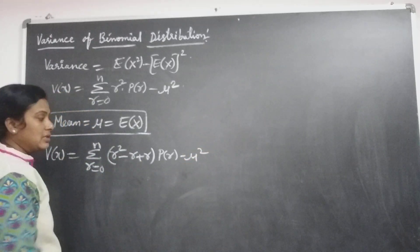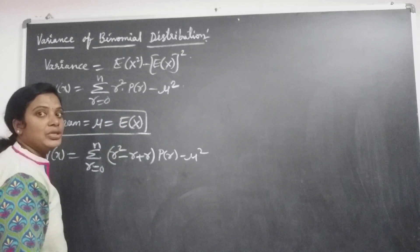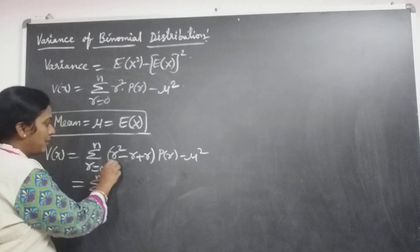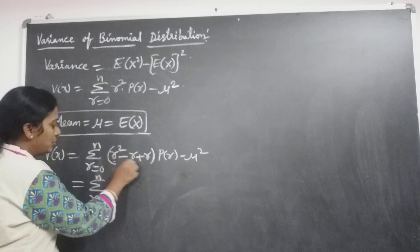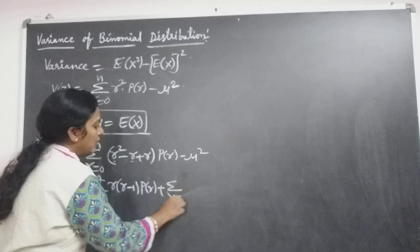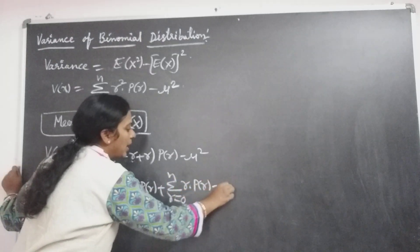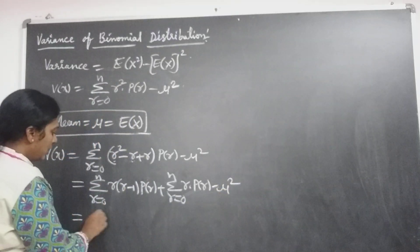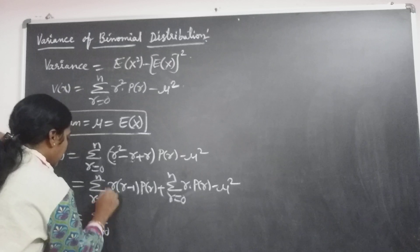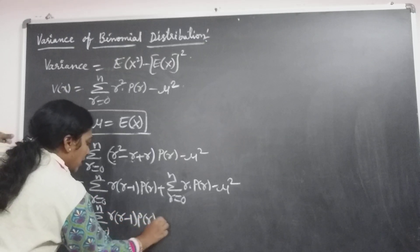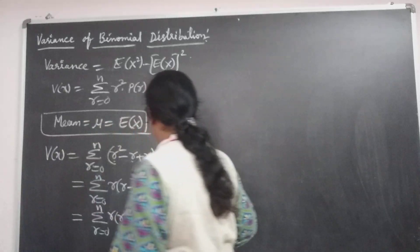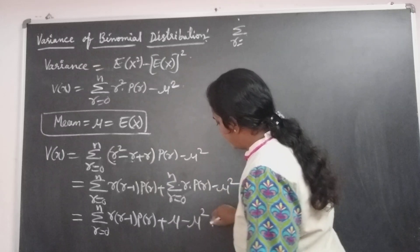For convenience, we write σ from r=0 to n with r² rewritten by adding and subtracting r, so r² = r(r-1) + r. The minus r plus r terms cancel, giving the same value σ from r=0 to n of r²·P(r). We combine the first two terms and write the third term separately, taking r common: r(r-1)·P(r) + σ r·P(r) - μ². Let this be equation 1.